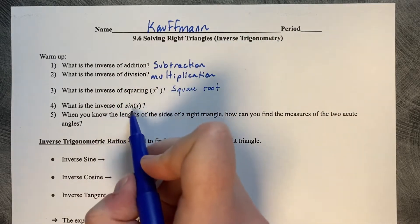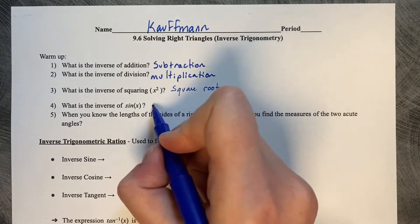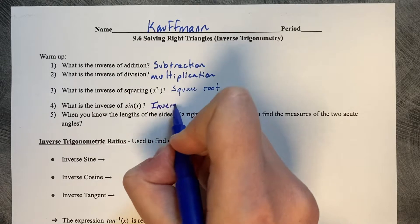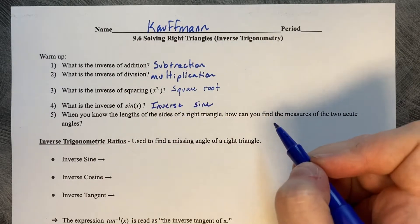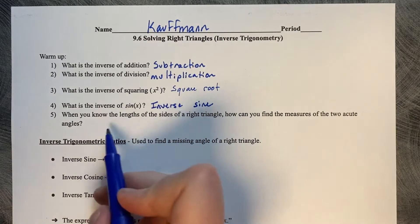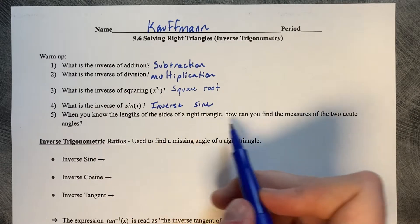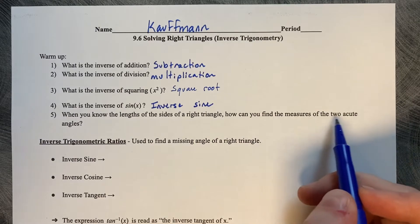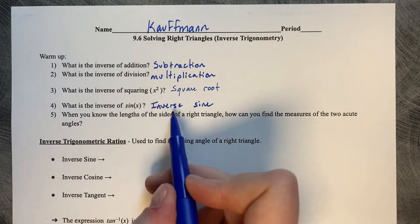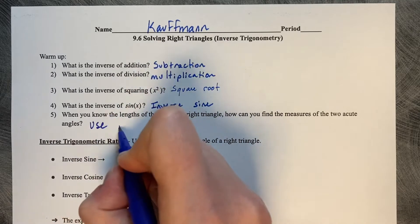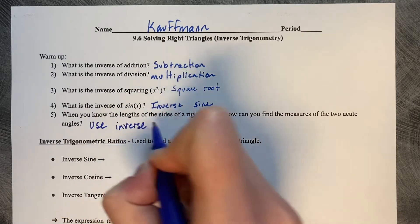What is the inverse of sine? The inverse of sine is called the inverse sine — it's the opposite of sine. When you know the lengths of all three sides of a right triangle, how can you find the measures of the two acute angles? You use inverse trigonometry.